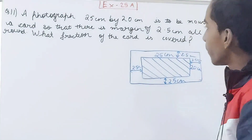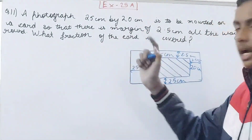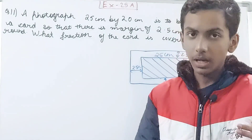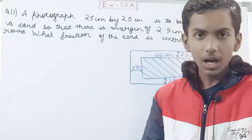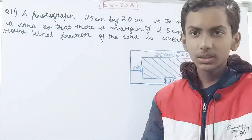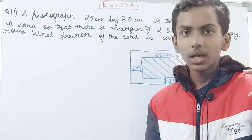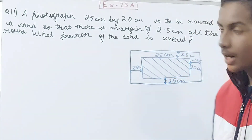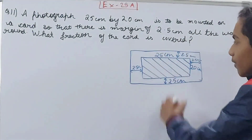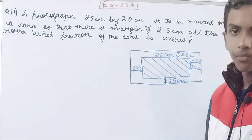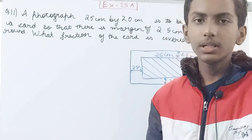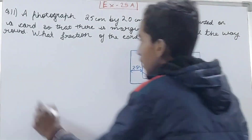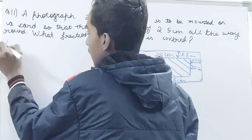What we have to actually find is: what fraction of the card is covered? Covered means the area that the photograph has covered. So for that, I will calculate the area of the photograph and also the area of the card.